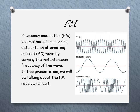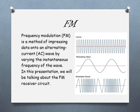So basically, what is FM? FM stands for frequency modulation. Frequency modulation is a method of impressing data onto an AC wave by varying the instantaneous frequency of the wave. Frequency modulation uses changes in the radio carrier frequency to encode the sound. FM radio transmission involves three phases: the transmitter, the medium, and the receiver. We are going to talk mainly about the receiver circuit in this presentation.